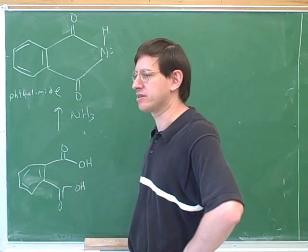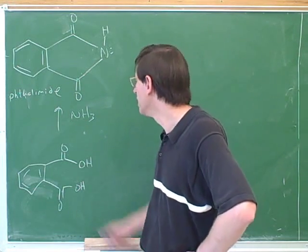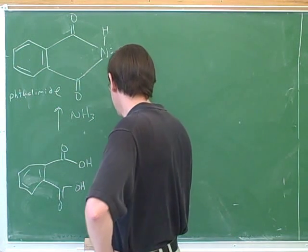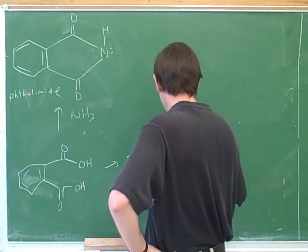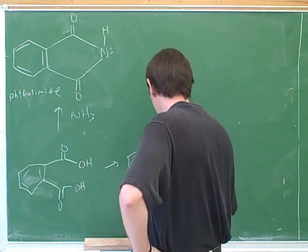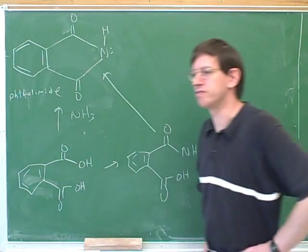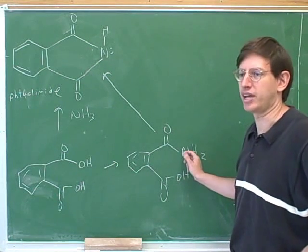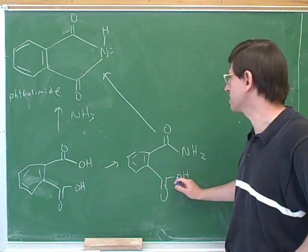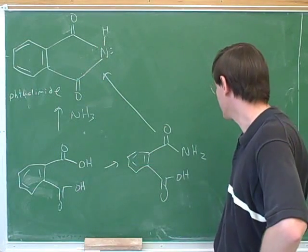Maybe to save time, we won't go through the mechanism. But it would be a good exercise to do the whole mechanism. There will just be two addition-eliminations, one after the other. First the nitrogen will displace this OH group, losing a hydrogen in the process. And then the nitrogen will displace this OH group, losing another hydrogen in the process.